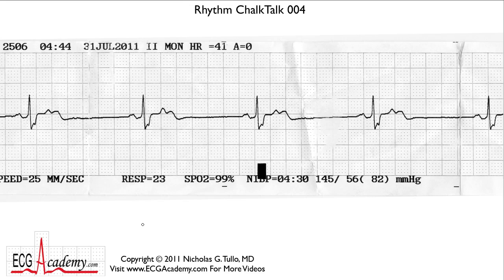This is an intermediate one — certainly not as bad as the last one. Let's give you a little clinical background. Imagine this patient is being monitored for some post-operative problems and the nurse calls that the patient has suddenly developed a heart rate of about 40 beats per minute. You have to look at the EKG and figure out what's going on.